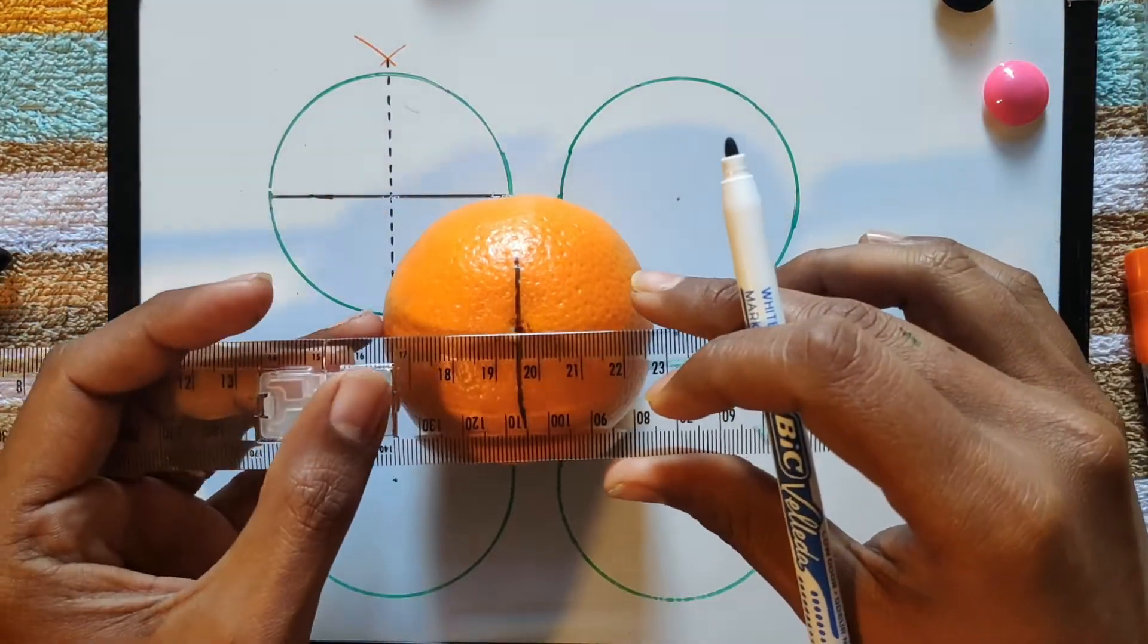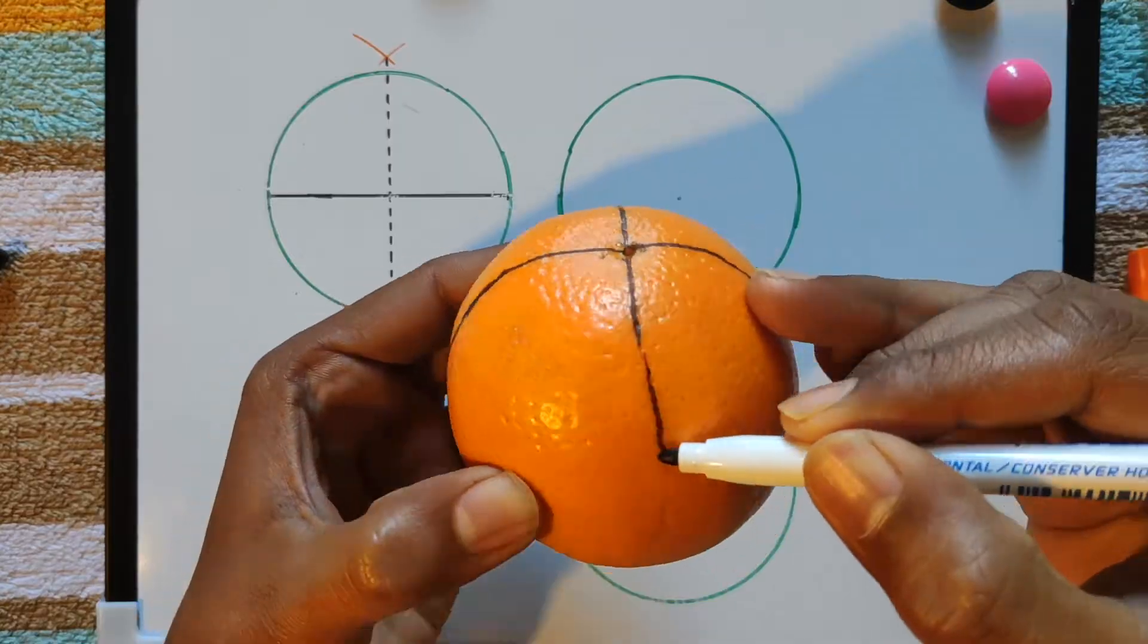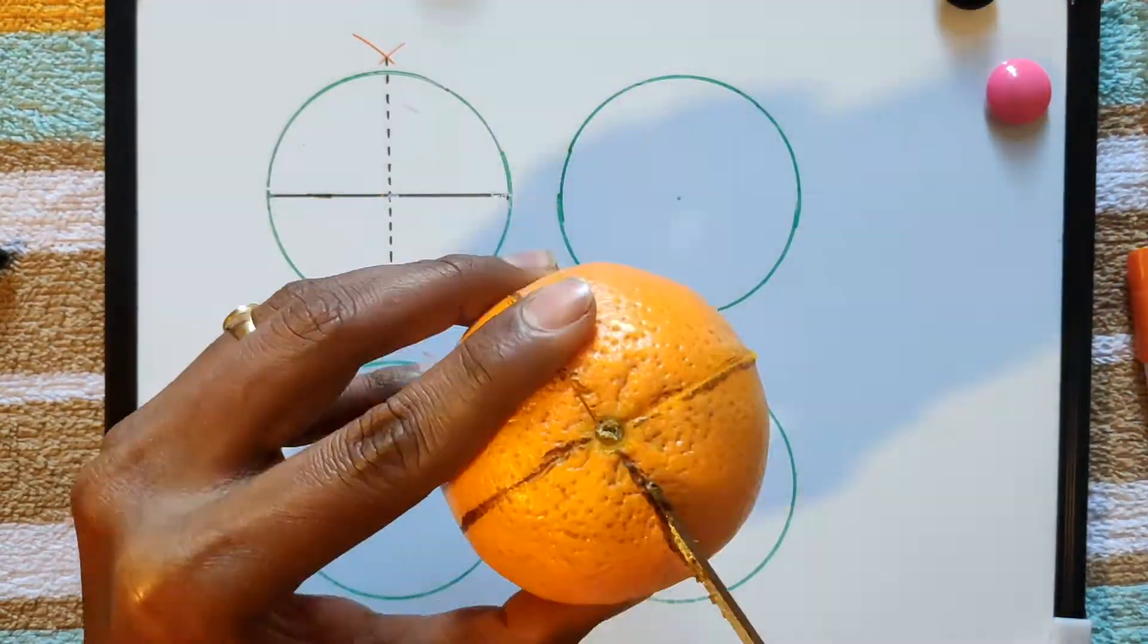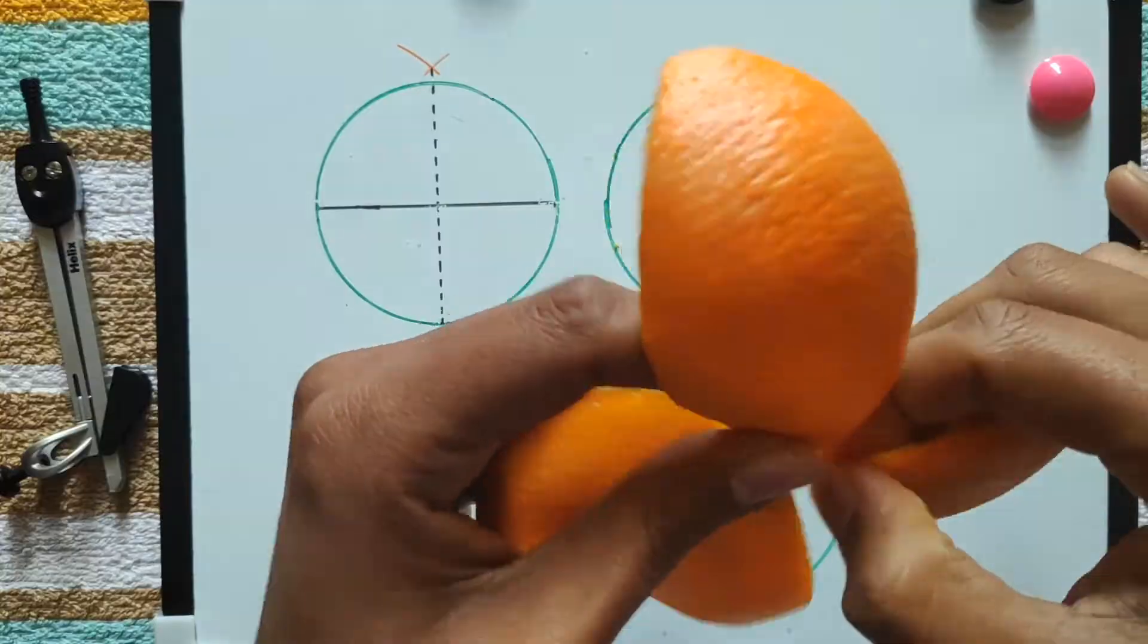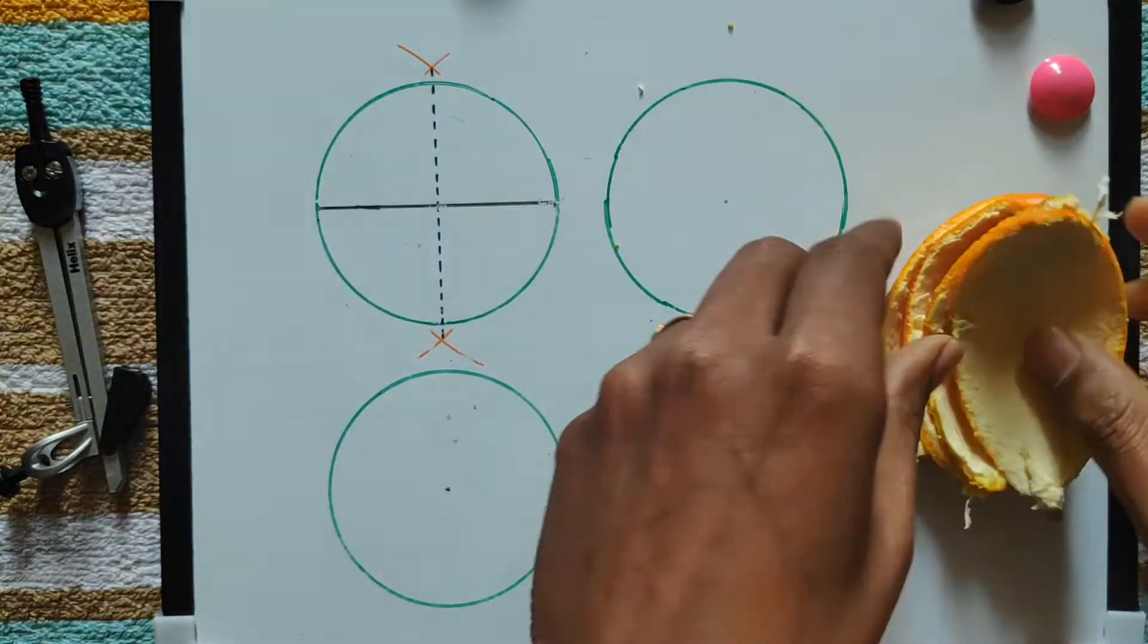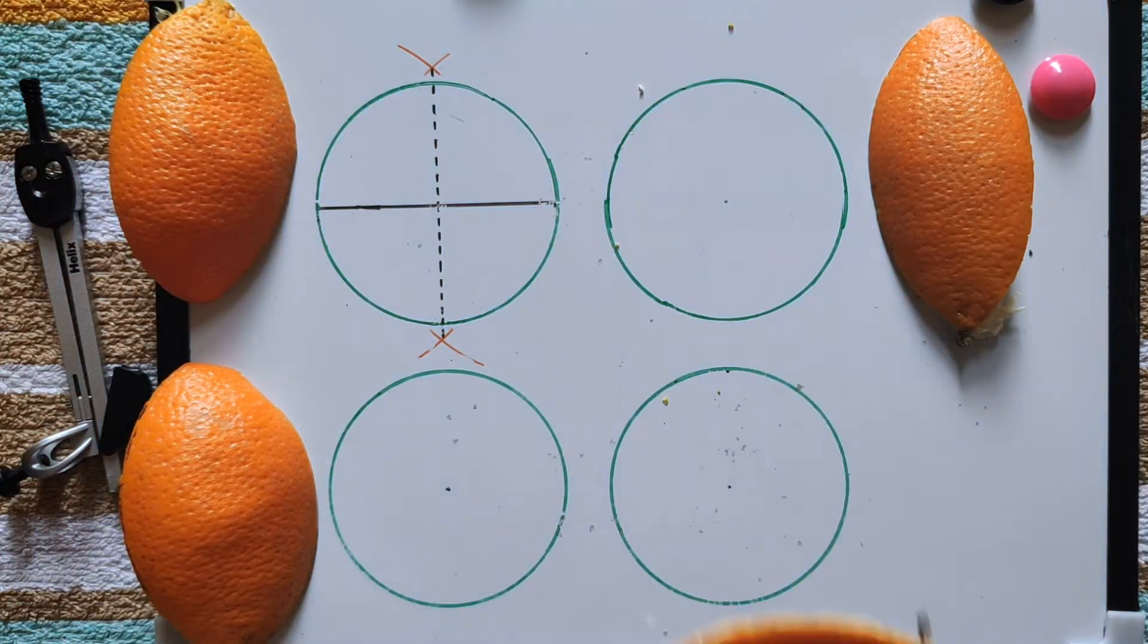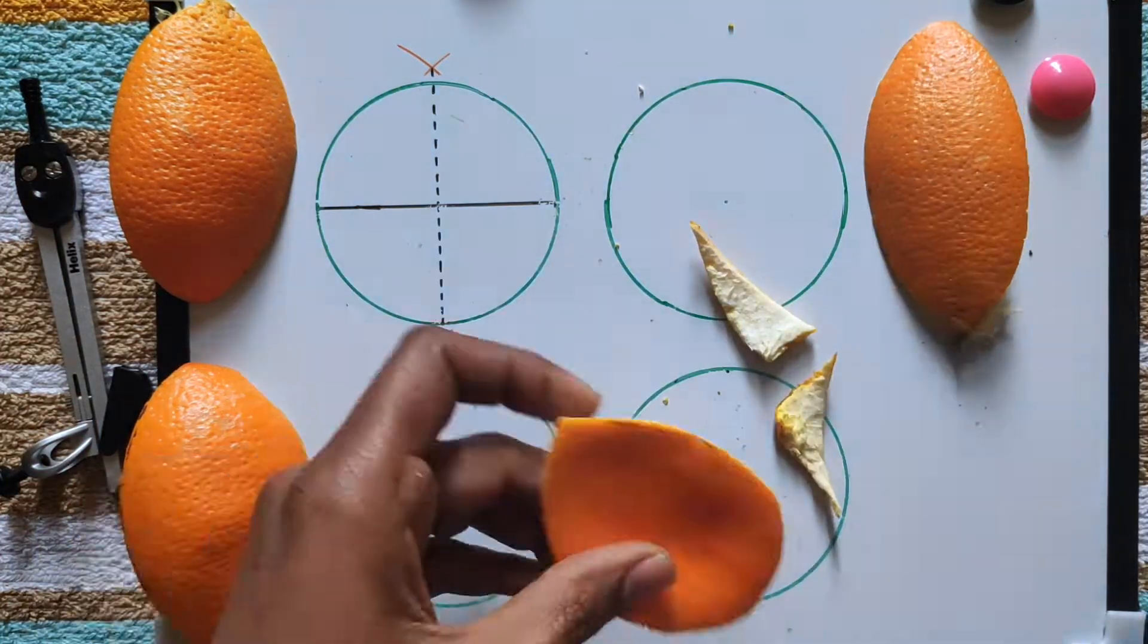Now let's peel the orange skin and try to fill the circles. Don't think it's an approximation - it's exactly equal. We have the next step to prove that one.